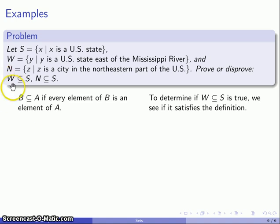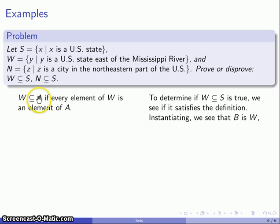If we make that comparison, we see that B is W and A is S. So W ⊆ S if every element of W is also an element of S. Now to complete the proof or disproof, we want to determine whether this is actually true. Is it in fact true that every element of W is also an element of S?